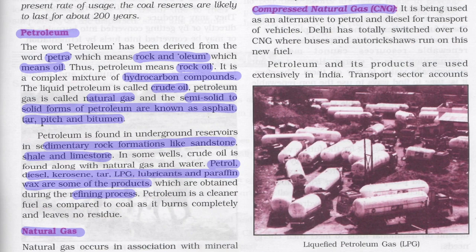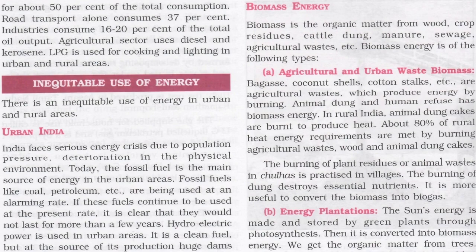Petroleum and its products are used extensively in India. The transport sector accounts for about 50% of total consumption, with road transport alone consuming 37%. Industries consume 16–20% of the total oil output. The agricultural sector uses diesel and kerosene. LPG is used for cooking and lighting in both urban and rural areas.